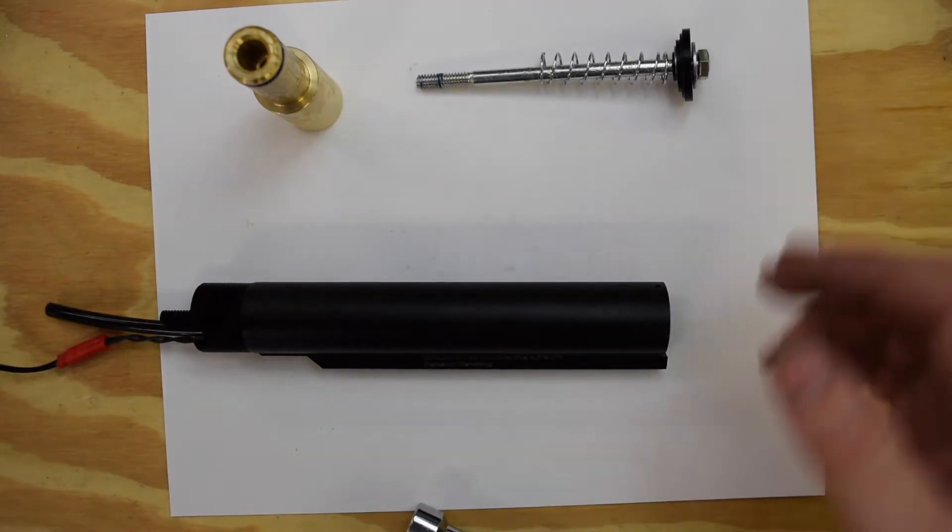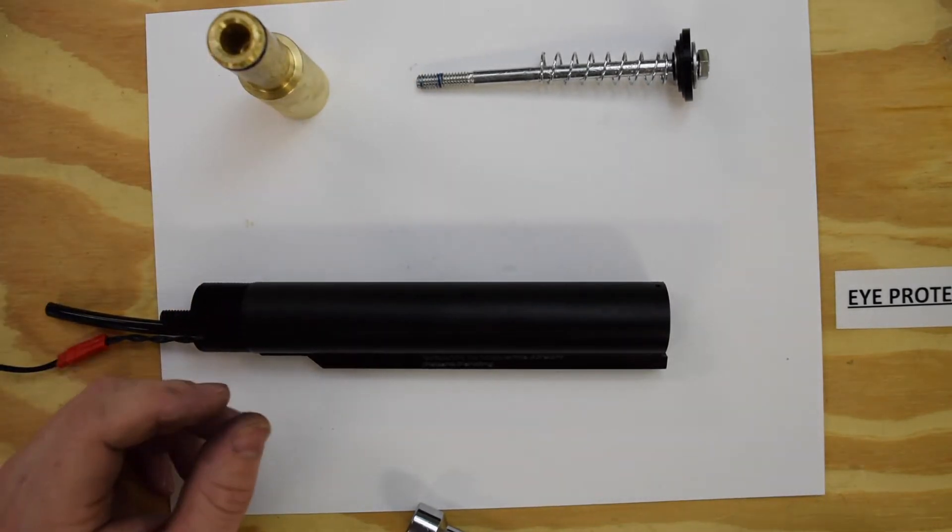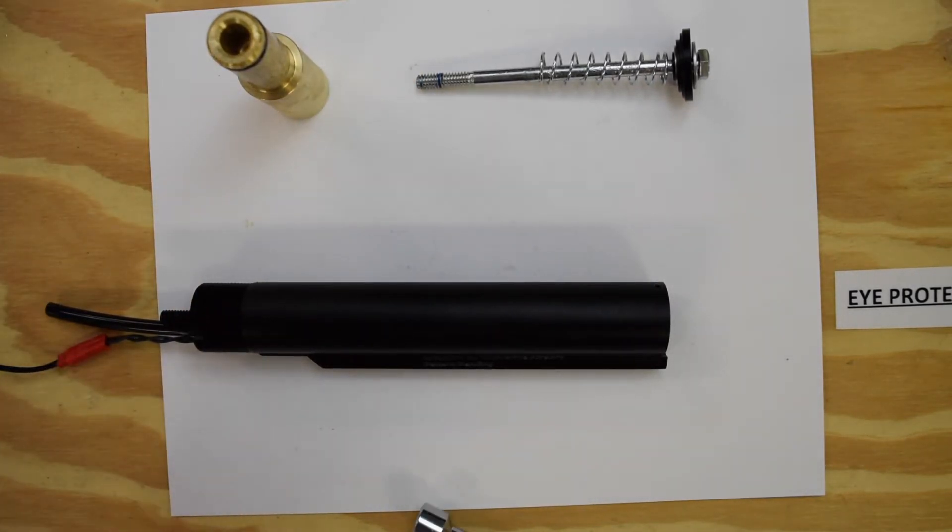For basic maintenance, that's really all you're going to need to do is take that off and lubricate your o-rings. These two o-rings are the only two dynamic o-rings in the system and you can put it back together. We're going to go ahead and break it all the way down here and show you what's inside in case you need to break it down further.